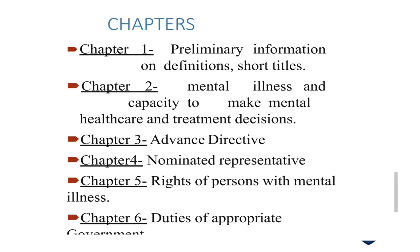Let's see what chapters come under the Mental Health Care Bill 2013. Chapter 1 covers preliminary information — definitions and short titles, such as what is a psychiatric hospital, who is a psychiatrist, and who is a psychiatric patient. Chapter 2 covers mental illness and capacity to make mental health care and treatment decisions, which relates to the advanced directive — where and how the patient can decide their own treatment.